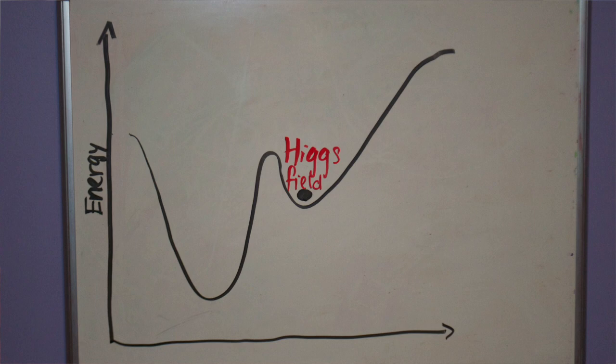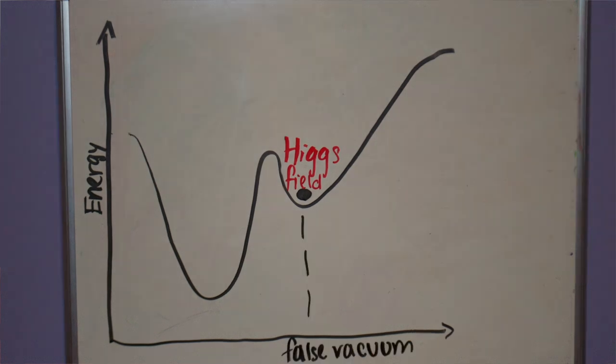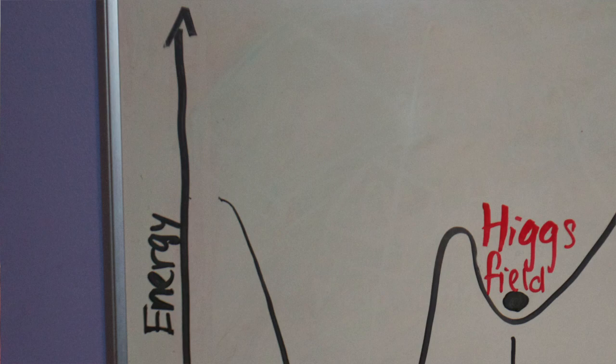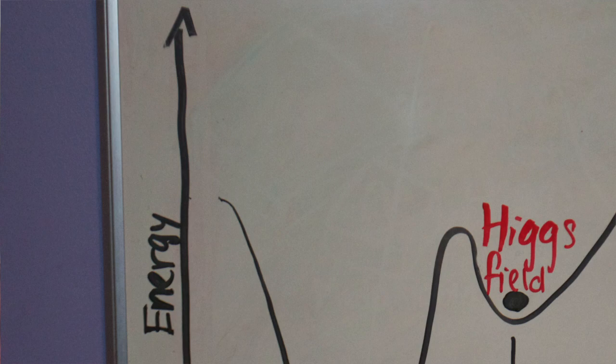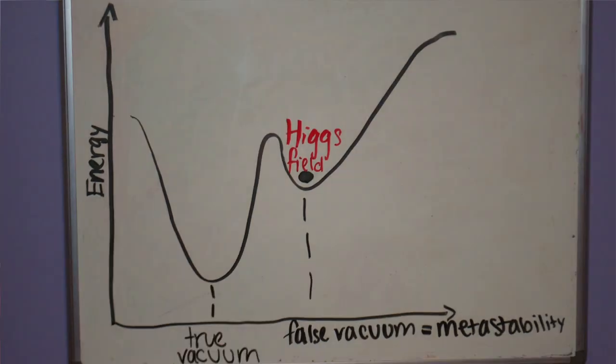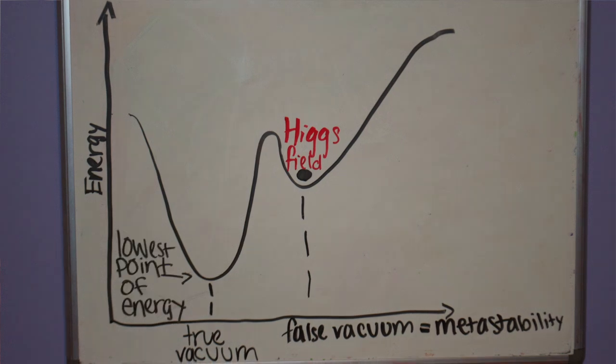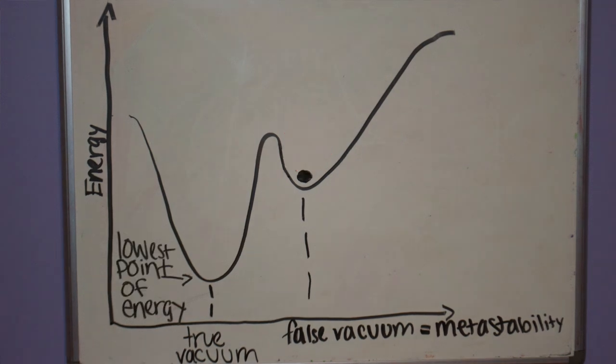Currently, the Higgs field is in a false vacuum or state of metastability. The y-axis shows the energy level, so it makes sense for the true vacuum to be at the lowest point of energy, which is right here. Now the scary part about this whole theory is that the Higgs field could jump over this barrier and into the true vacuum.